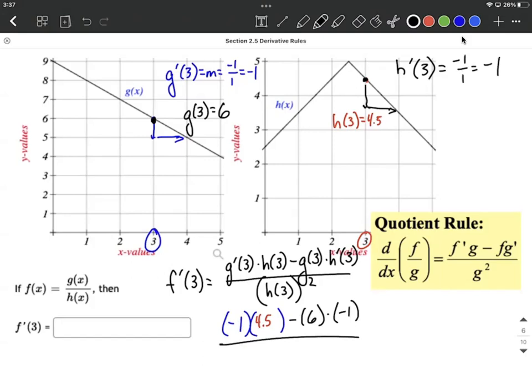That's all supposed to be divided by h of 3 squared. So we already mentioned that h of 3 was going to be 4.5. Then we're going to square it.